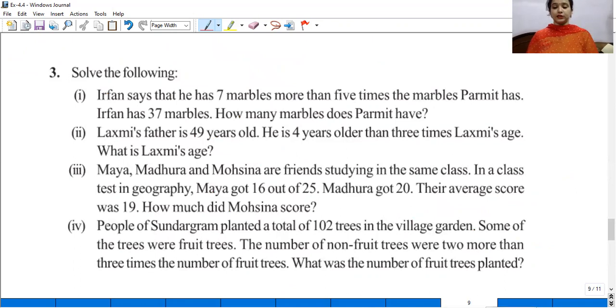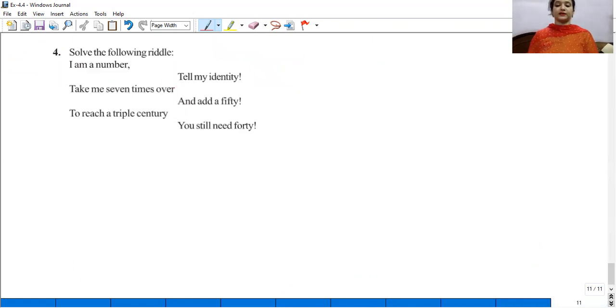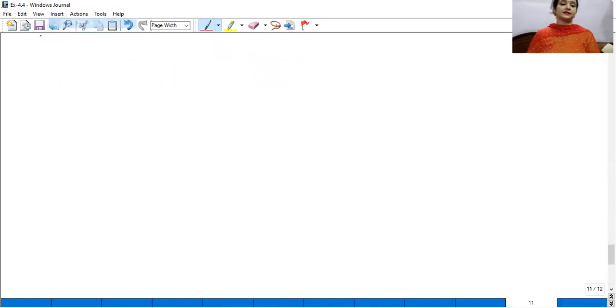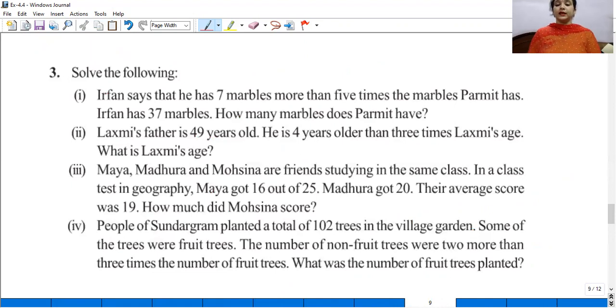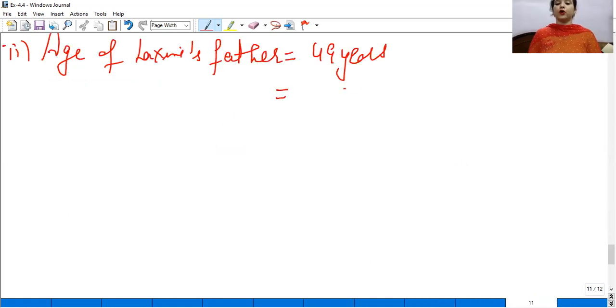Lakshmi's father is 49 years old. So, the age of Lakshmi's father is 49 years. And what conditions are given? Let's see. He is 4 years older than 3 times Lakshmi's age.